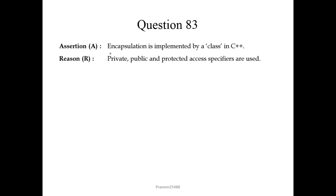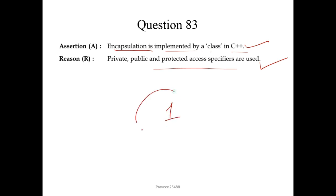Question 83. Encapsulation is implemented by a class in C++ — correct statement. Private, public, and protected access specifiers are used — also correct. And because of this, encapsulation is implemented by a class in C++. This is the correct explanation of the assertion. So we choose option 1.